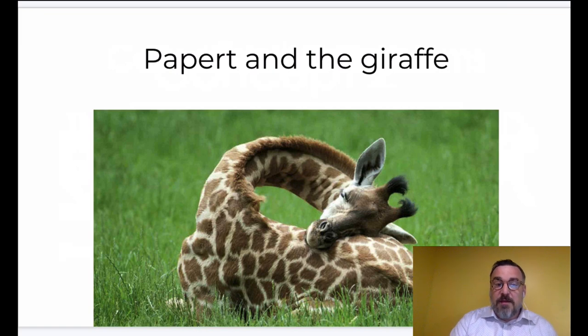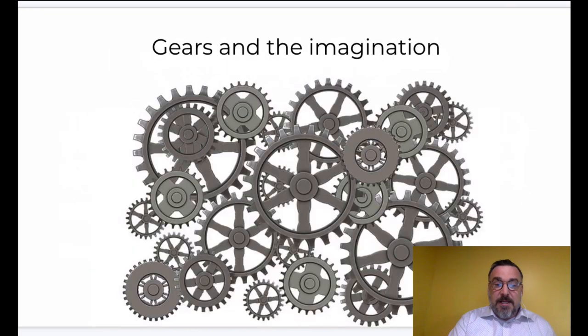He was trying to solve that problem of scarcity of information with the knowledge machine. For Papert, that built on his own beliefs that people really needed access to the kinds of things he'd had as a kid. He had an uncle who gave him a set of gears that were a formative piece of development, allowing him to understand potential and how things work together.